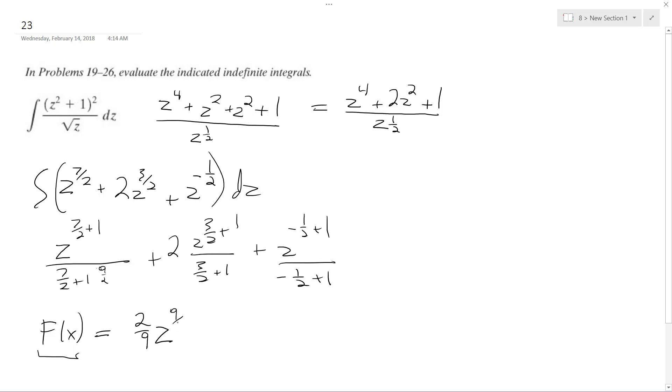Z raised to the nine halves plus four halves. Z raised to the five halves plus two. Z raised to the one half plus z. And that's it.